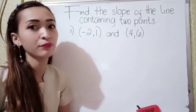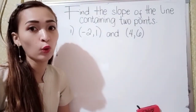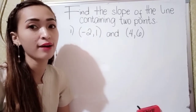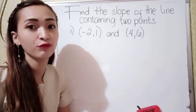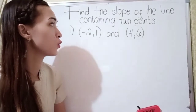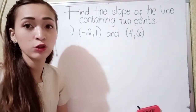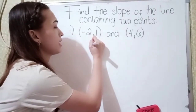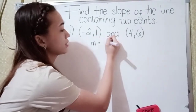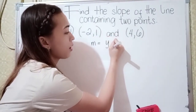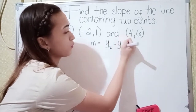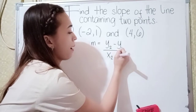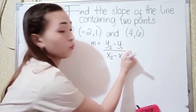For example, find the slope of the line containing two points. For number one, we have negative 2, 1, and 4, 6. To get the slope of the line, we have the formula which is m equals y sub 2 minus y sub 1 over x sub 2 minus x sub 1.